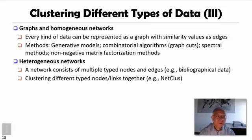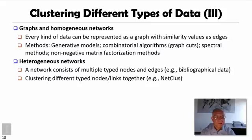Beyond homogeneous networks are heterogeneous networks. This kind of network consists of multiple types of nodes and edges, like bibliographic data or hospital data handling diseases, patients, doctors, and treatments. To cluster different kinds of nodes and links together, there are interesting algorithms such as the NetClus algorithm.